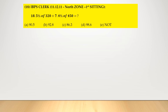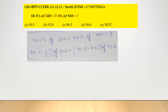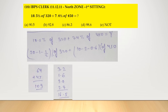Question: 18.5% of 320 plus 7.4% of 450. 18.5% = (20 − 1 − 0.5)% and 7.4% = (10 − 2 − 0.6)%. Adding terms: 20% of 320 = 64 and 10% of 450 = 45, giving 109. Subtracting: 1% of 320 = 3.2, 0.5% of 320 = 1.6, 2% of 450 = 9, 0.6% of 450 = 2.7; total subtraction = 16.5. Final result: 109 − 16.5 = 92.5. Option number E, none of these.